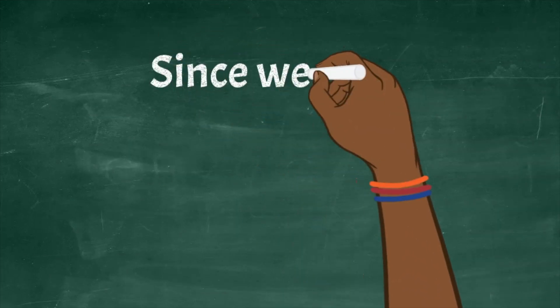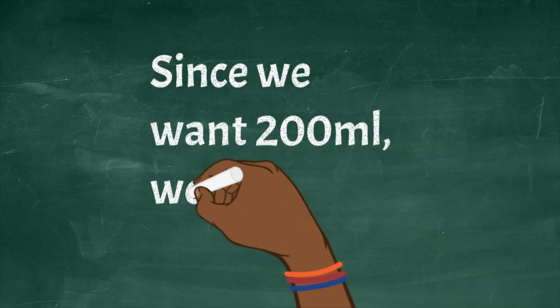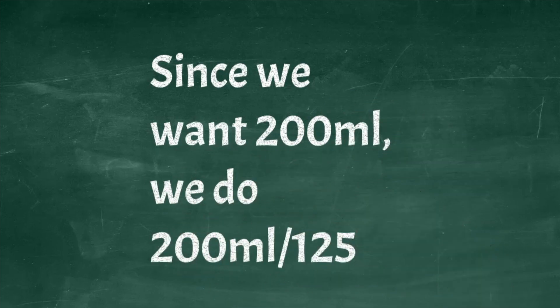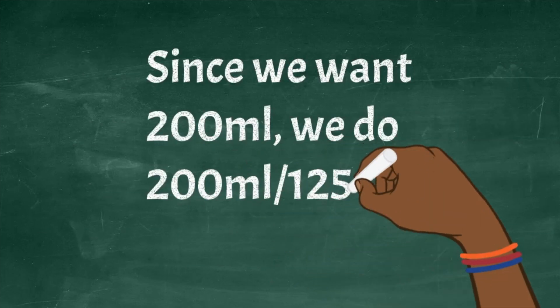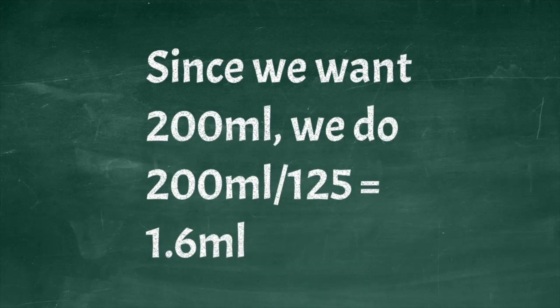Since we actually want 200 milliliters, we would do 200 milliliters divided by the 125 dilution ratio we've just calculated, and that gives us an answer of 1.6 milliliters.